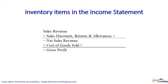First up is the income statement. The cost of goods sold flows in here. We start with sales revenue, then subtract any sales discounts, sales returns, and sales allowances to get to net sales revenue. From here we subtract all of the cost of goods sold to arrive at what's called gross profit.